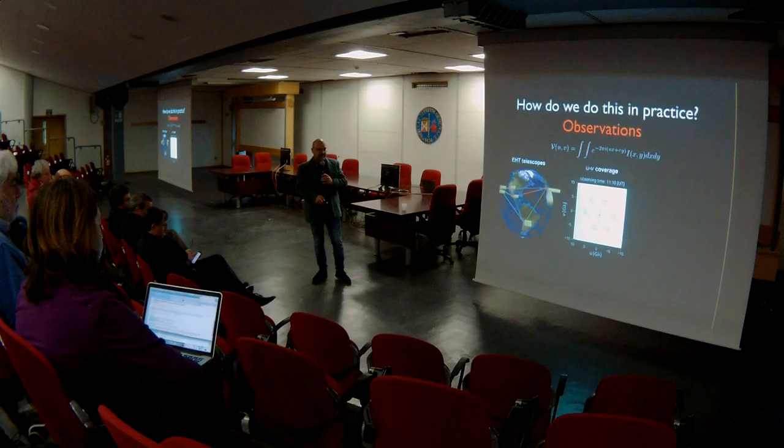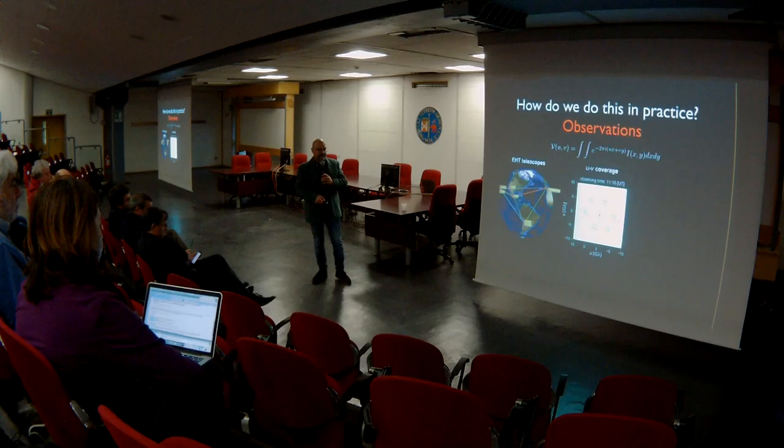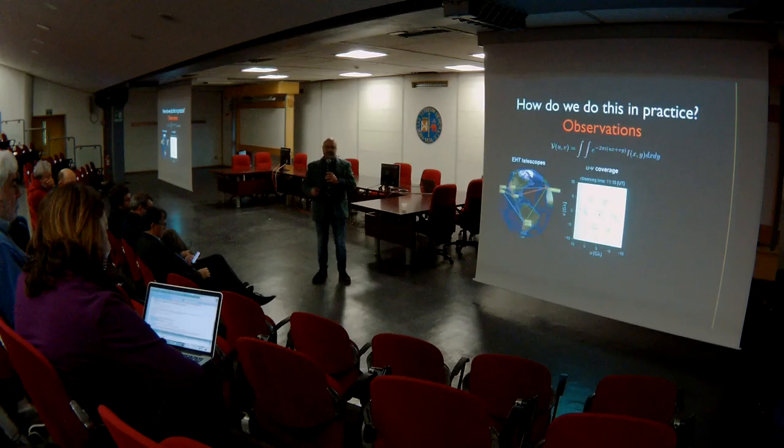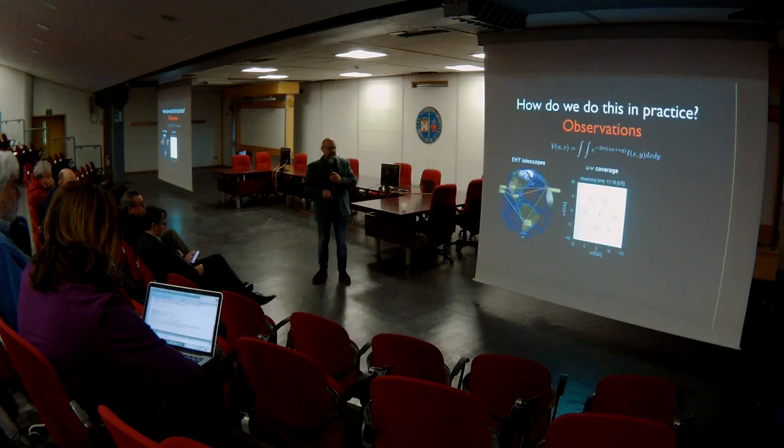Each baseline represents a point in this space — the Fourier space. And as the Earth rotates and the baseline changes, this point will trace a track of different color. And on the basis of the information in this space, you can build an image. This is the image, the way it looks like on the sky.